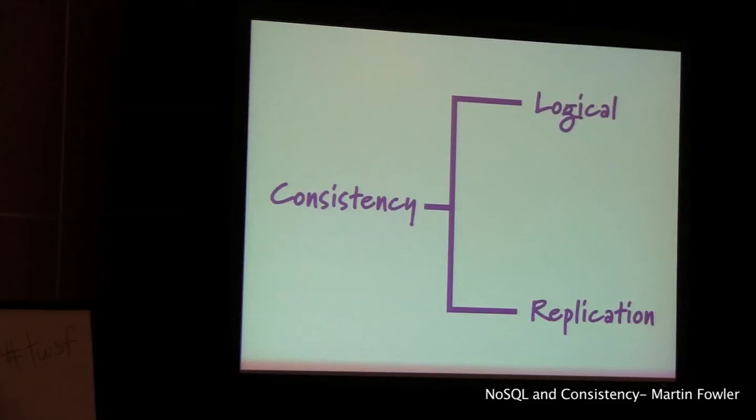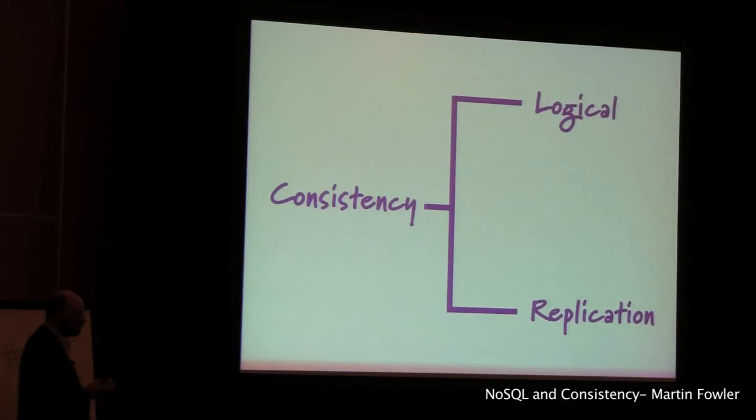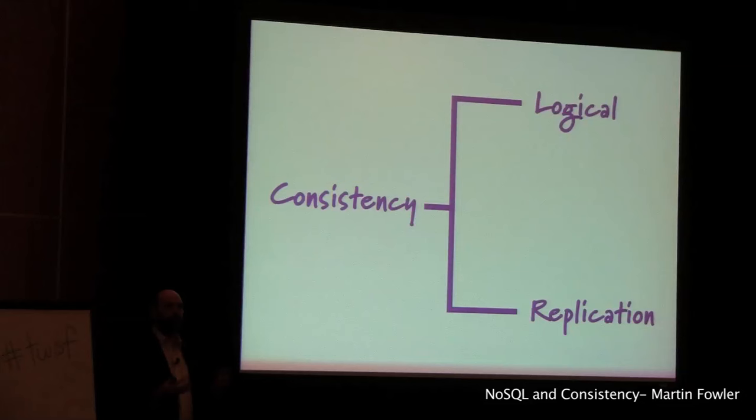So far I've talked about one aspect of consistency — what I would call logical consistency. These kinds of consistency problems are common whenever multiple people are using the same database. But NoSQL systems typically introduce a whole new area of consistency problems to do with replication. The reason why a lot of people like NoSQL databases is because of the notion that we can easily replicate the data in lots of different places. But as soon as you start having multiple copies of the data around, you introduce a whole new way of screwing up your consistency.